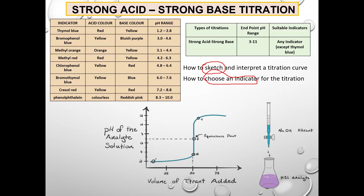Here you see a titration curve that shows how the pH of the analyte in your flask changes as the volume of titrant is added from the burette. At the beginning of the titration, before the addition of sodium hydroxide, the pH of the solution in the flask is the pH of HCl, shown here as 2. As the acid solution is titrated, neutralization starts to occur, the concentration of HCl gradually decreases, and the pH increases. There is still excess of HCl in the flask as the neutralization process is not completed.